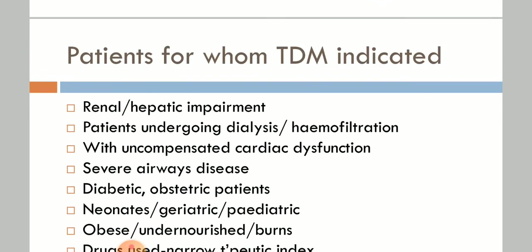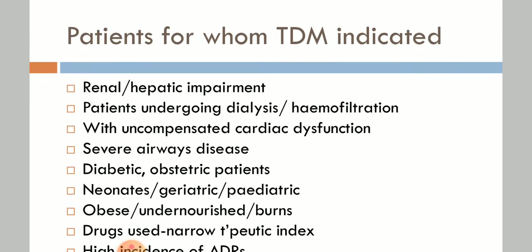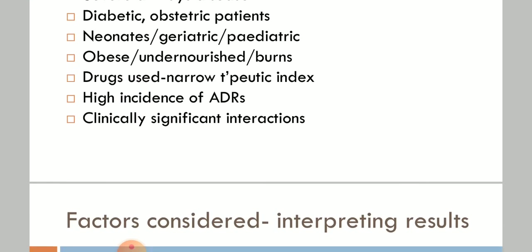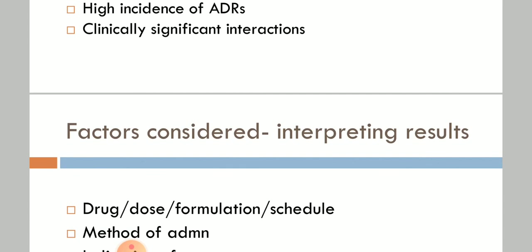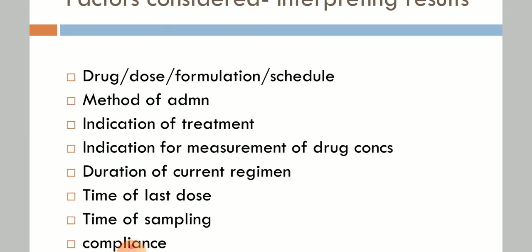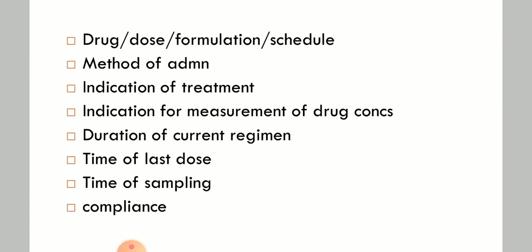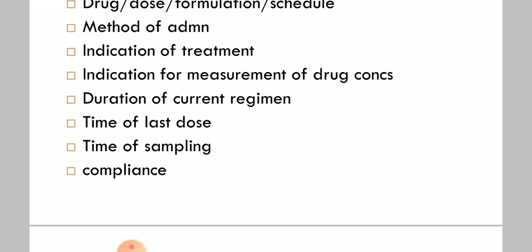All findings must be documented, particularly for high-risk conditions. Factors to consider when interpreting TDM results include: drug dose, formulation, schedule, method of administration, indication of treatment, indication for measurement of drug concentration, duration of current regimen, time of last dose, time of sampling, and compliance.